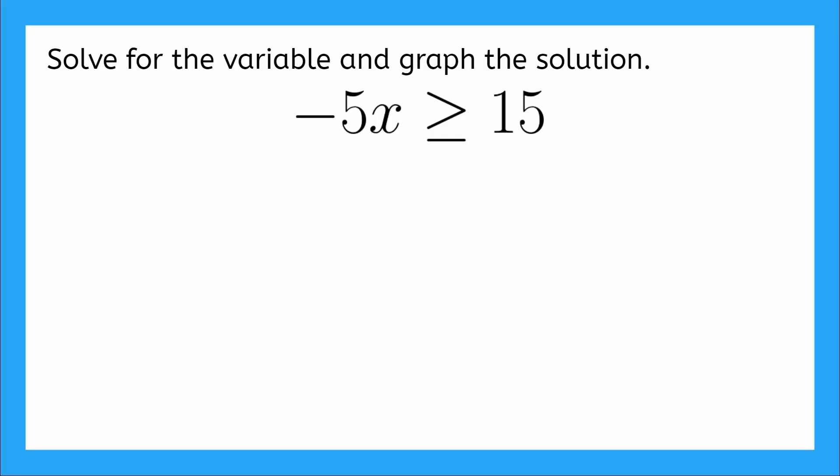Okay, so we're still solving one-step inequalities, but this time we have a negative number in our inequality. So if we want to find the solutions for our variable x and then graph the solution, what do we have to do? Yeah, we just need to get this x all by itself.